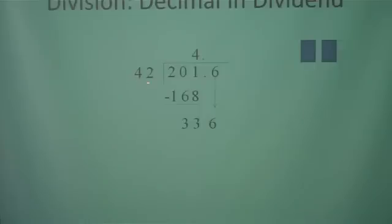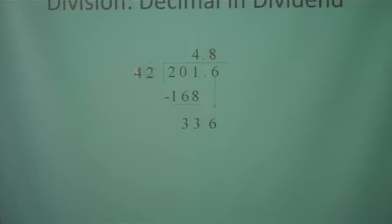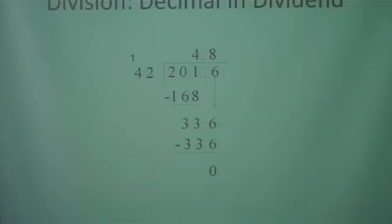Now we need to estimate how many times 42 can go into 336. We're going to use the cover technique again — cover the 2, cover the 6, and ask how many times can 4 go into 33 without going over. We're going to estimate an 8. 8 times 2 is 16 — put down your 6 and carry your 1. 8 times 4 is 32, plus 1 is 33. When you subtract, you get 0. There's nothing else to bring down, so 4.8 is our answer.